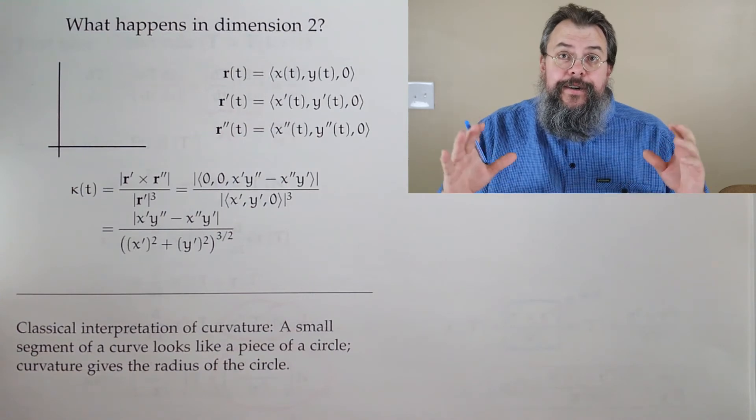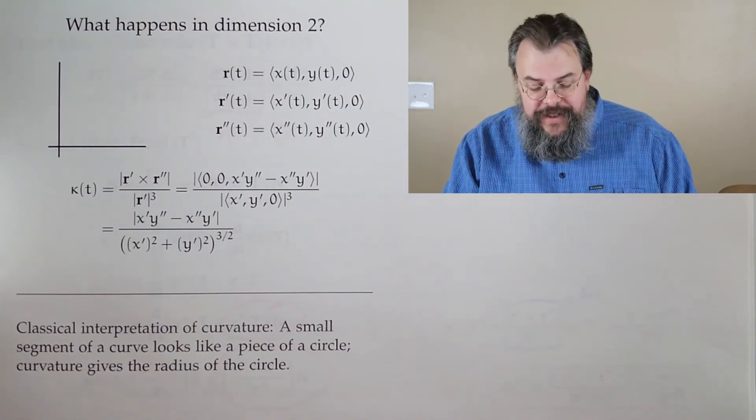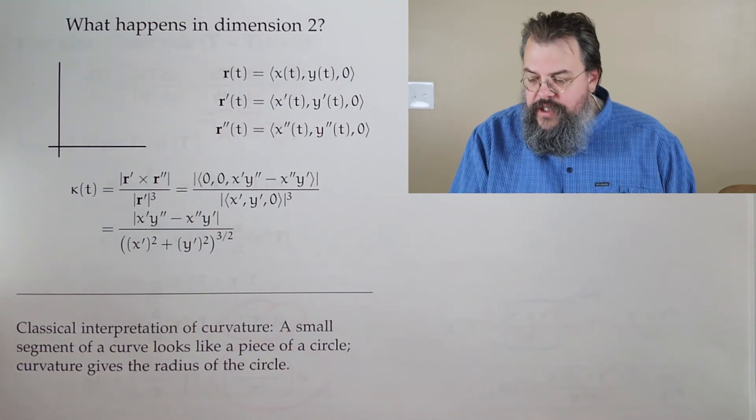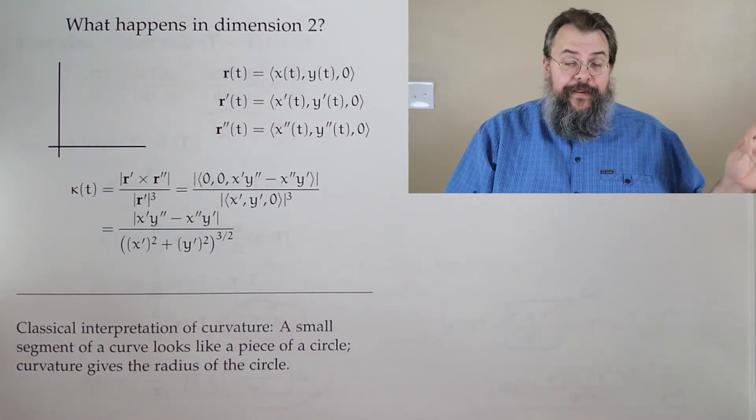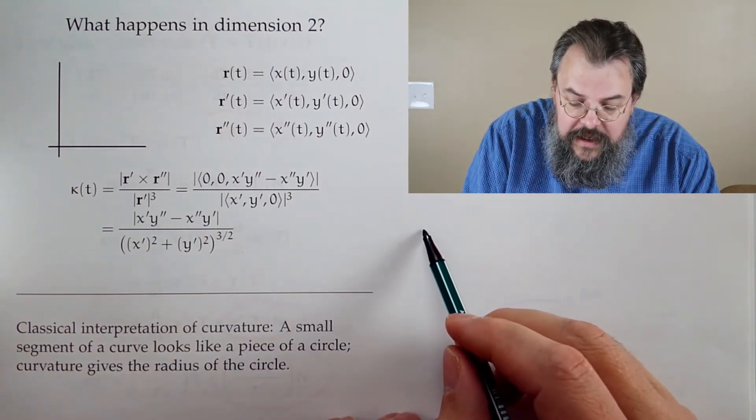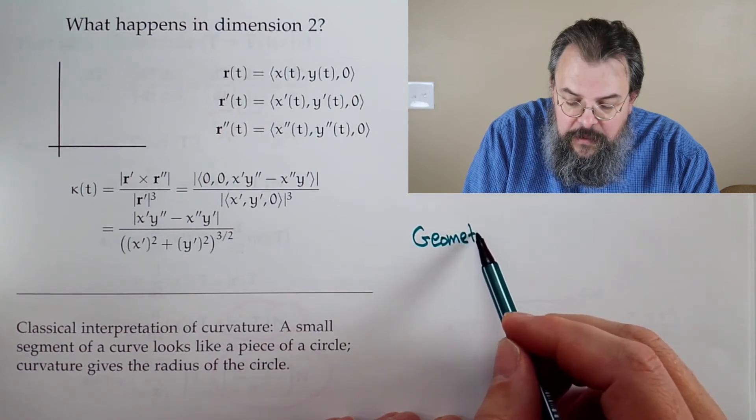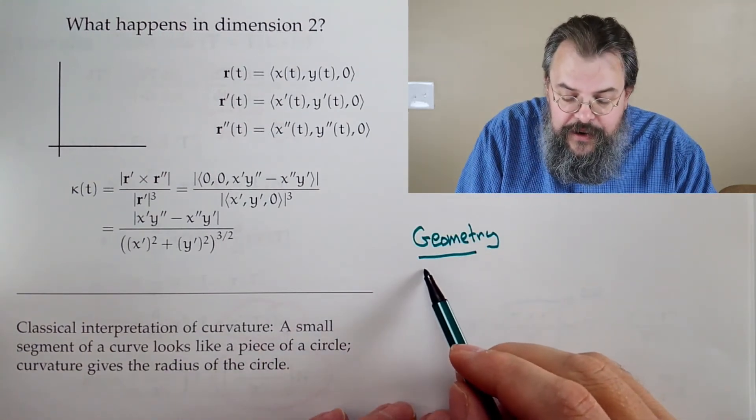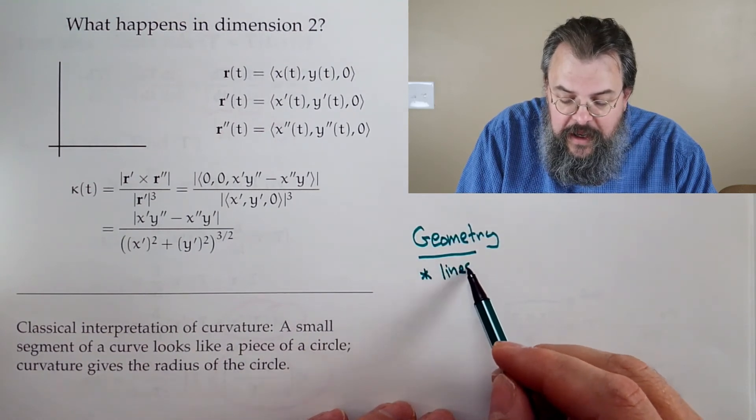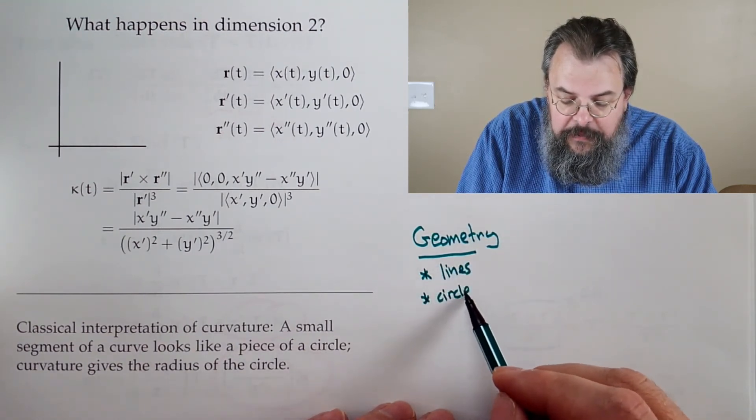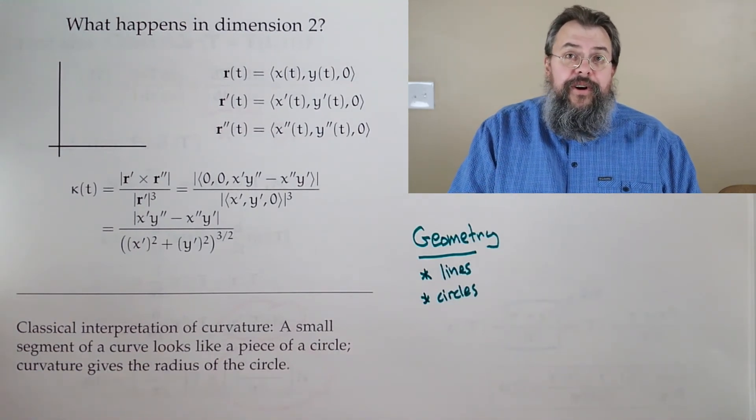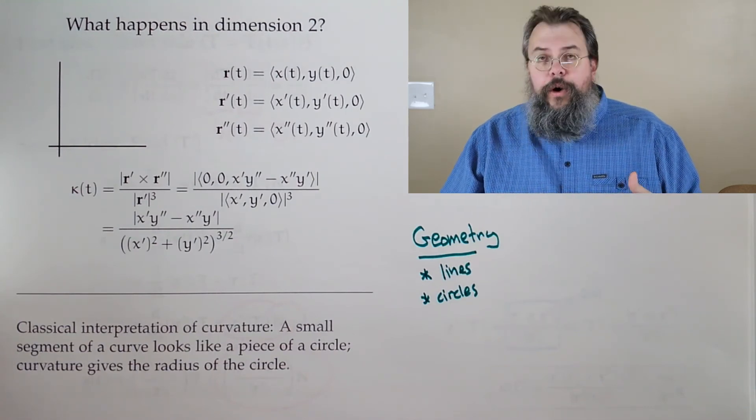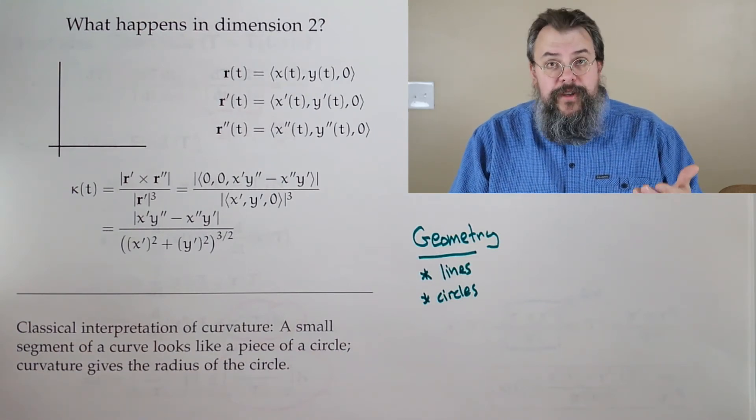Why do we care about curvature? What's the historical motivation? The motivation goes back very far, way before calculus started. If you went back to ancient Greece where you had the heart of geometry, and calculus builds off of geometry, they said we care about two things: we care about lines and we care about circles.